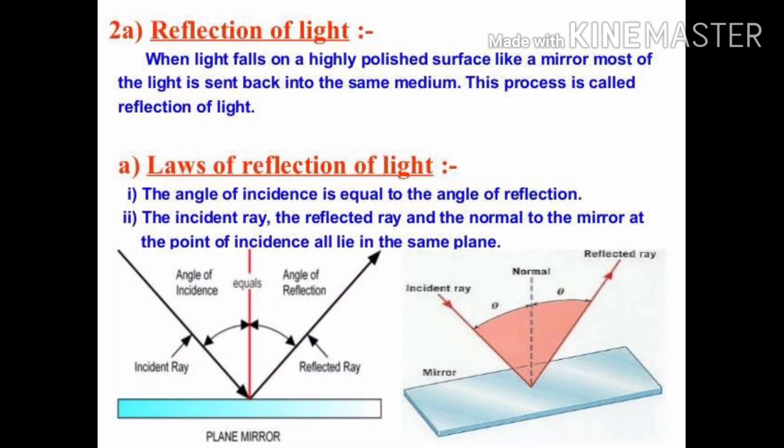A highly polished surface such as a mirror reflects most of the light falling on it. You are already familiar with the laws of reflection of light. Let us recall these laws. First, the angle of incidence is equal to the angle of reflection. And second, the incident ray, the normal to the mirror at the point of incidence, and the reflected ray all lie in the same plane.